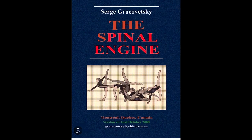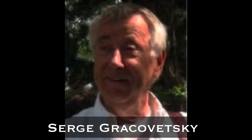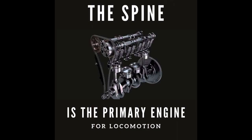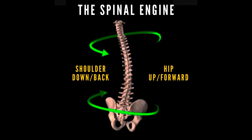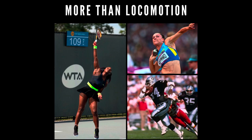The spinal engine theory comes from a Canadian biomechanist named Serge Grakovetsky. His studies indicated that the spine was the primary engine for human locomotion. This concept is clearly illustrated when we observe a human with no legs walking. Grakovetsky observed that to create efficient movement, the spine rotates and side bends to one side, essentially pushing our shoulder down and back so that our hip can come up and move forward. As speed and intensity increases, so does the range of motion through the spine.